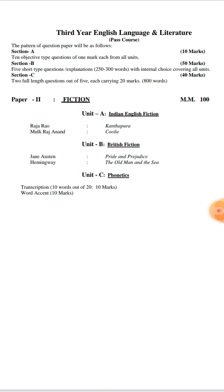In Paper 2, which is Fiction, there are also three units. In Unit A, there are two novels: Kanthapura by Raja Rao and Coolie by Mulk Raj Anand. Both these novels belong to the independence or the nationalist movement in India, and the literature written during the national movement of the 1930s and 1940s.